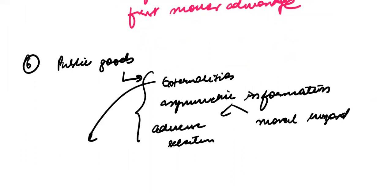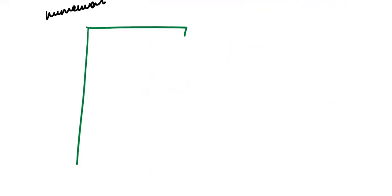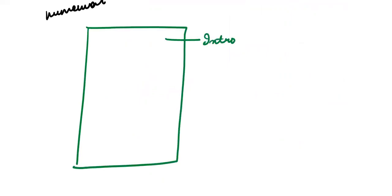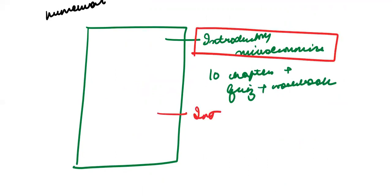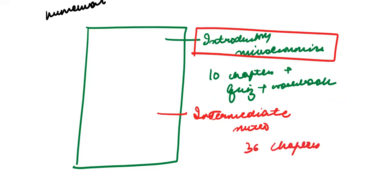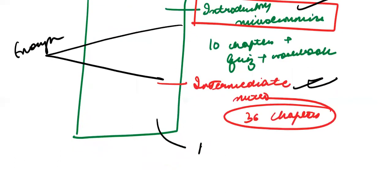The entire microeconomics content in the portal has three levels. The first level is introductory microeconomics, with mainly 10 chapters, plus a quiz and workbook for each chapter. This is followed by intermediate microeconomics, which has 36 chapters — very important. Doing introductory and intermediate well is enough to clear the exam. Then we also have advanced lectures.